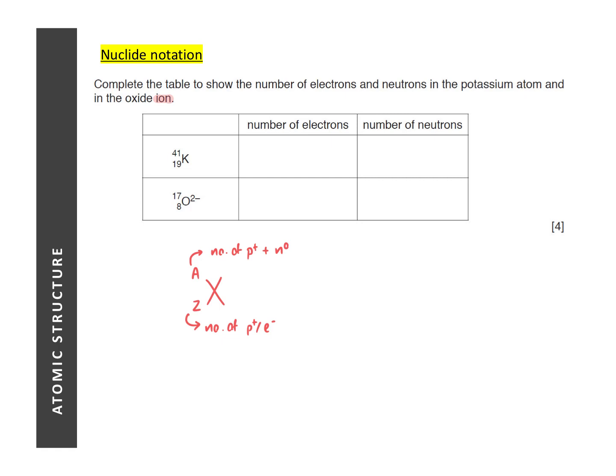If you look at the two particles here, I hope you can spot that oxygen in this case is an ion. Based on the fact that an ion is formed when an atom loses or gains electrons, the number of electrons and number of protons in an ion is not going to be the same. Let's do the example of potassium first. That one should be pretty simple. Number of electrons is 19, which is the same as number of protons, and the number of neutrons will be 41 minus 19, that will be 22.